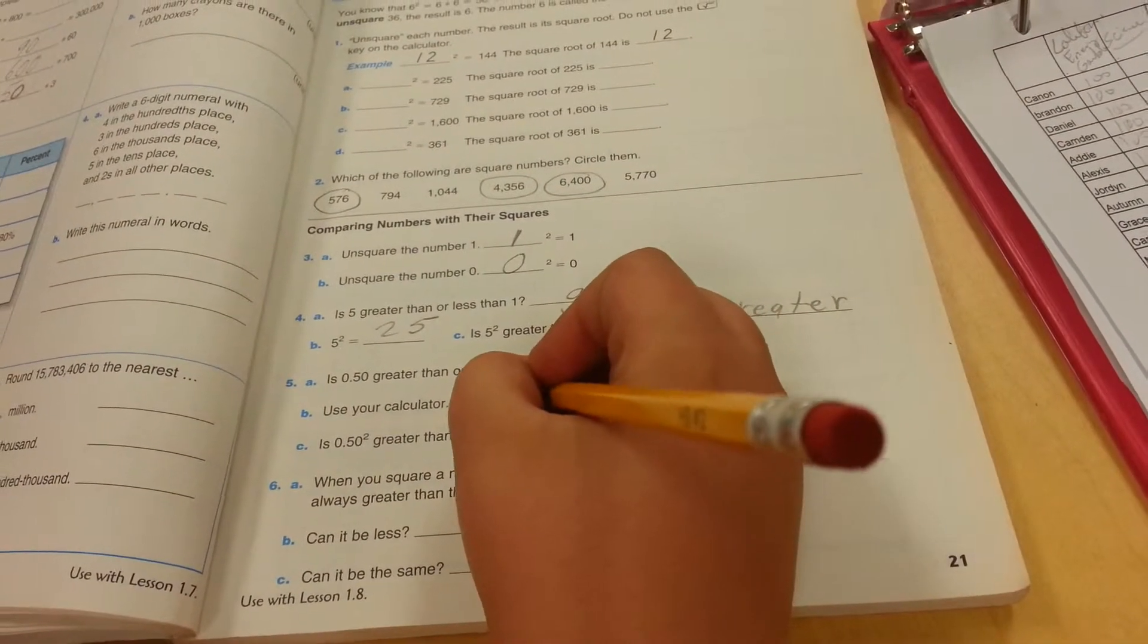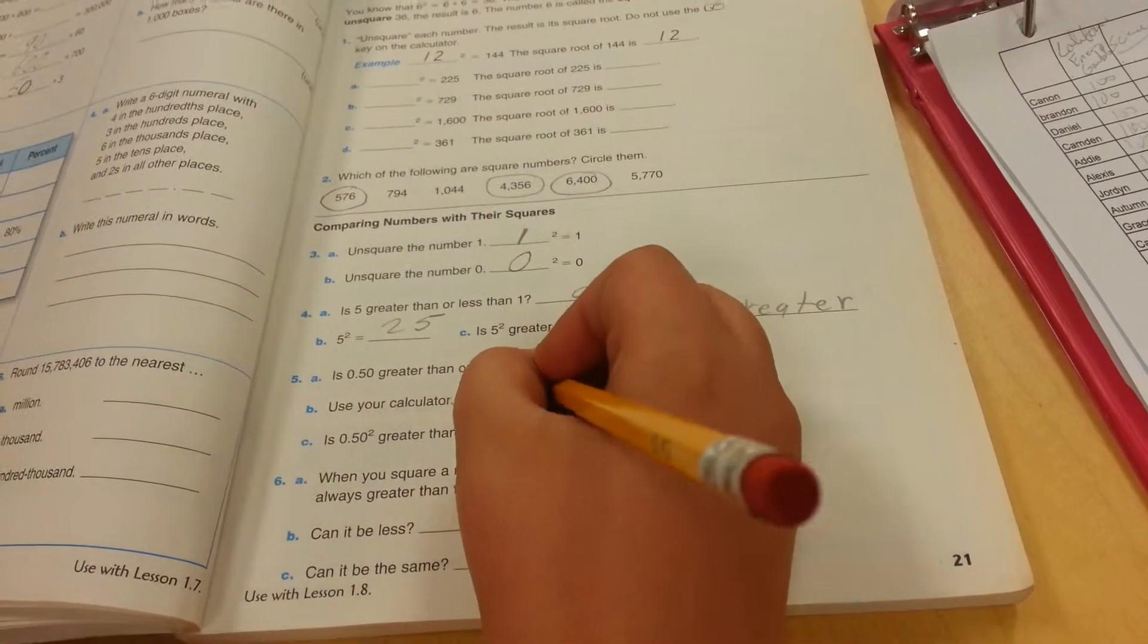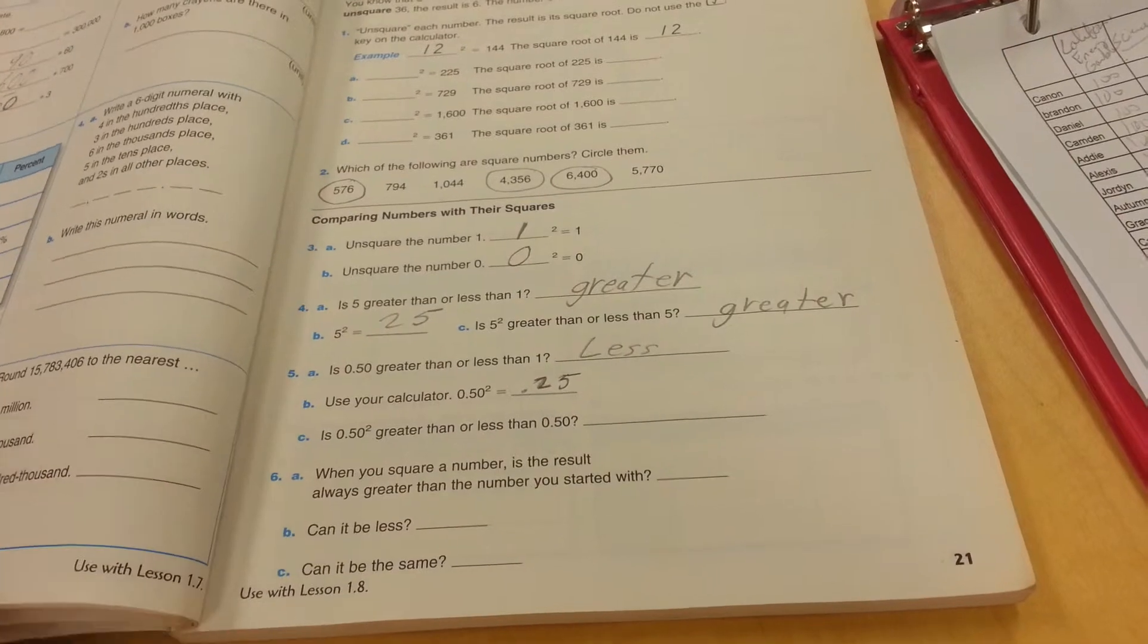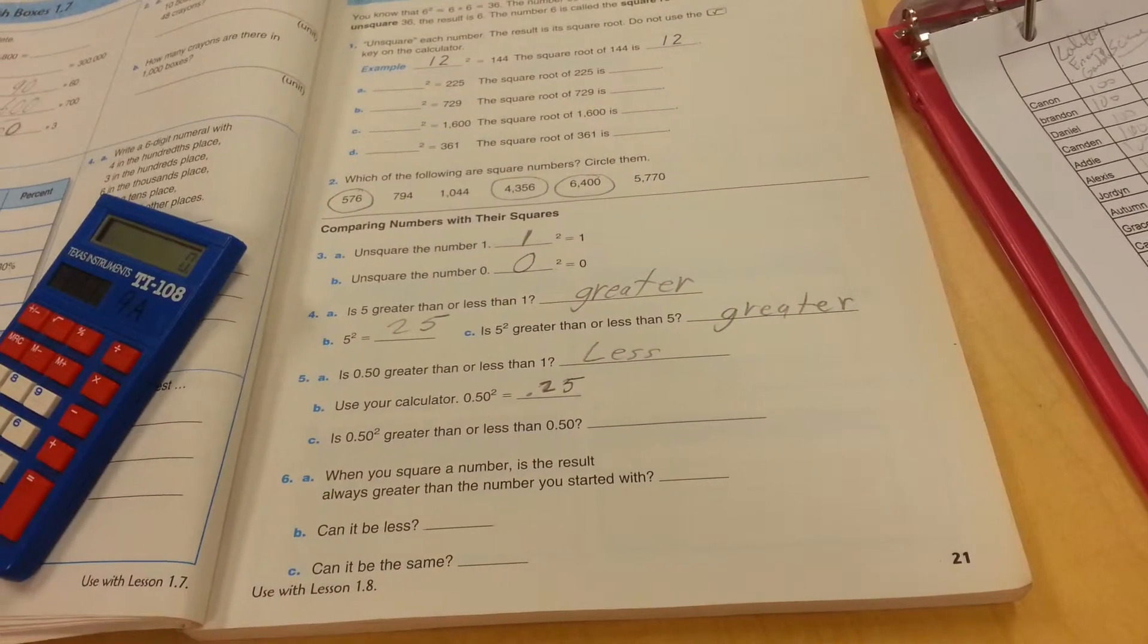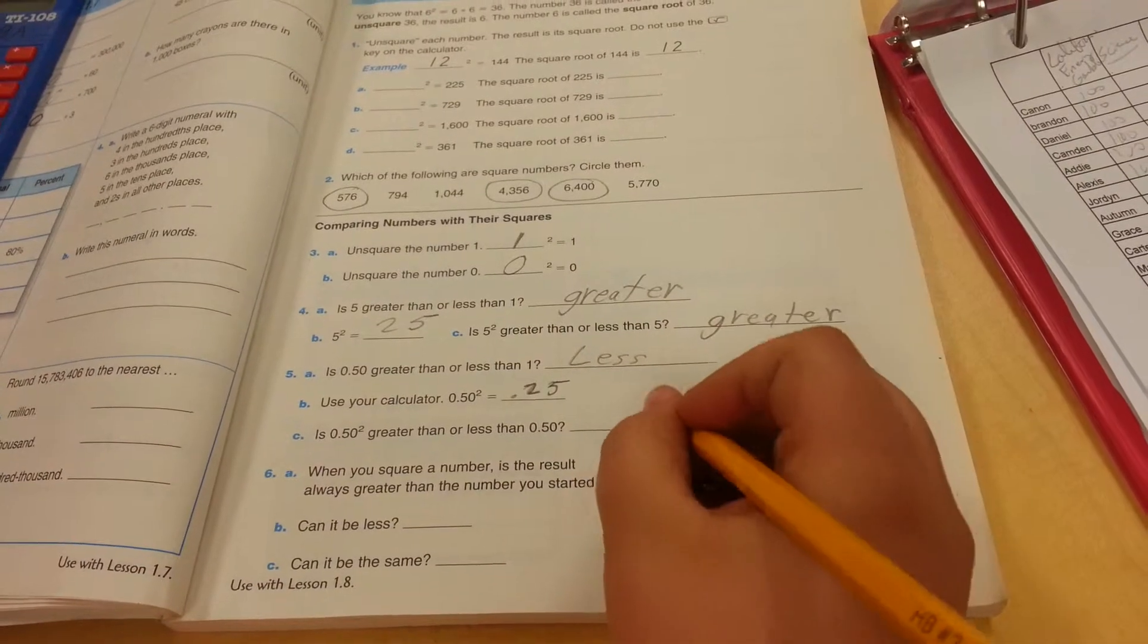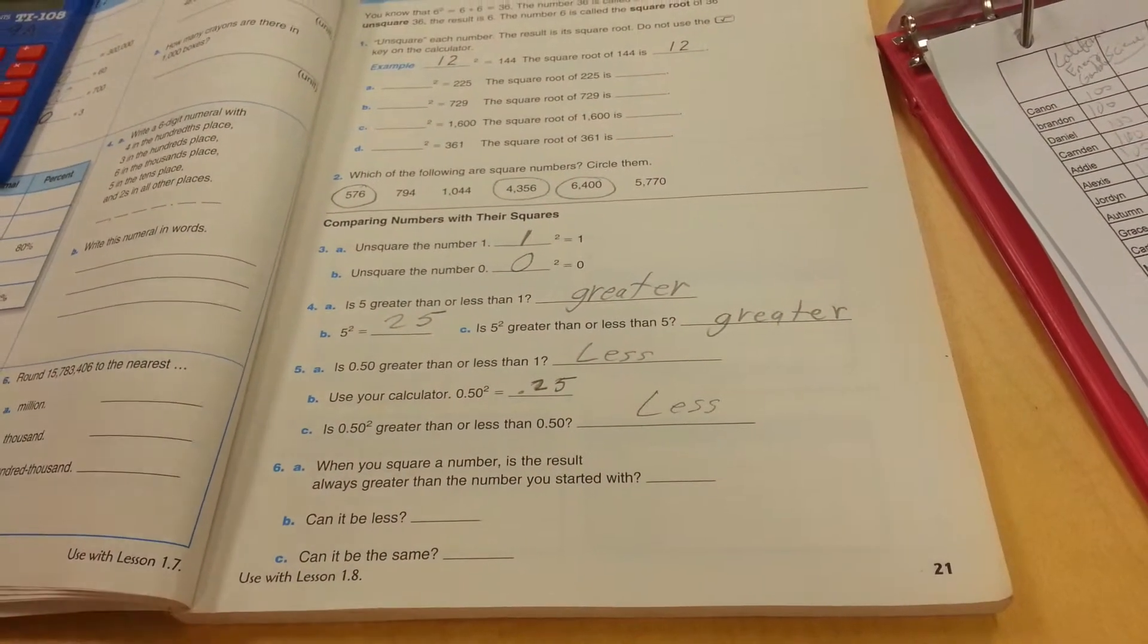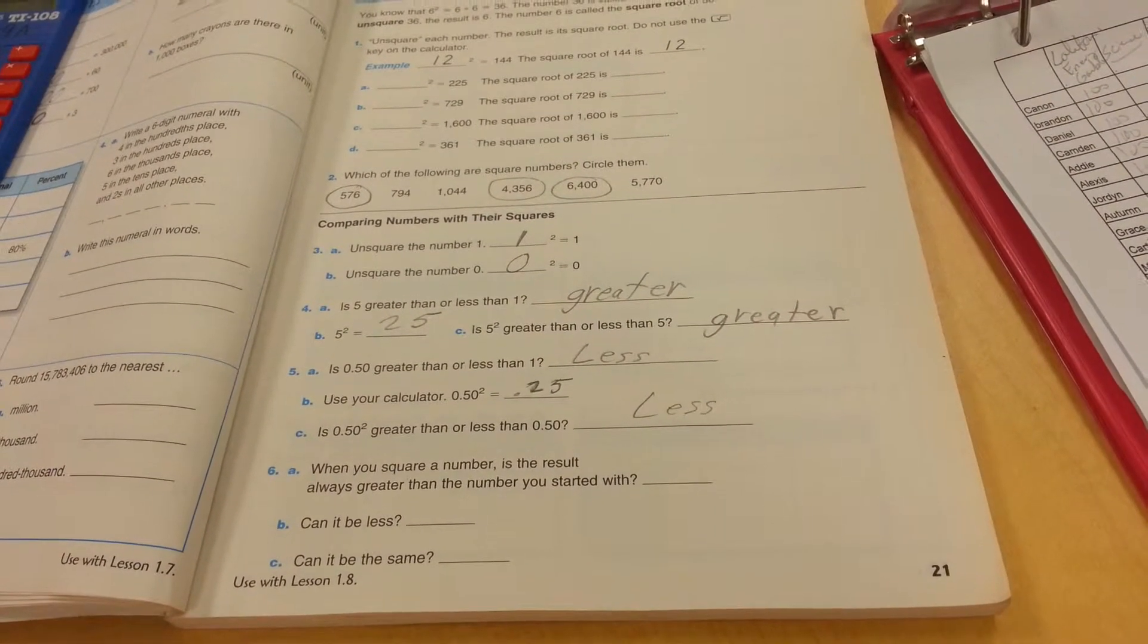So when we squared this, did it get bigger or did it get smaller? It's 0.25 smaller than 0.50. So it's less. Is 50 hundredths squared greater or less than 50 hundredths? It's less. How could that be? When you multiply something by a number less than 1, it gets smaller.